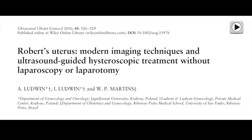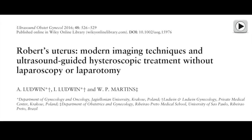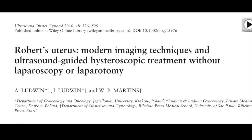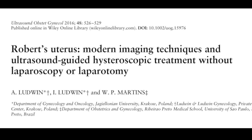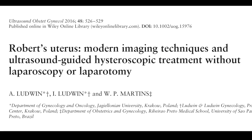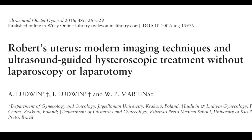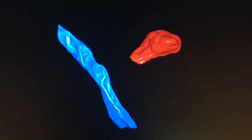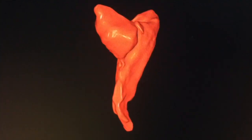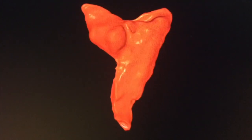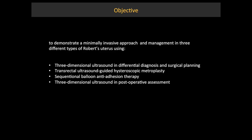The Robert's Uterus is considered a unique anomaly whose prevalence may be underestimated due to misdiagnosis. Laparotomy and laparoscopic metroplasty have been performed. Recently, a case with a small hematometra treated with ultrasound-guided metroplasty using a hysteroscopic approach, with normalization of uterine cavity shape and volume, has been described.